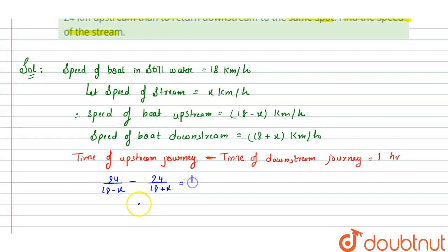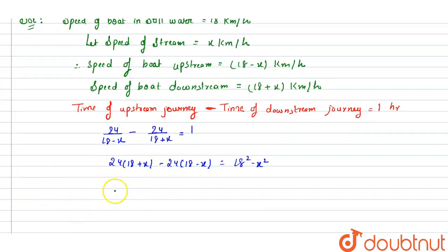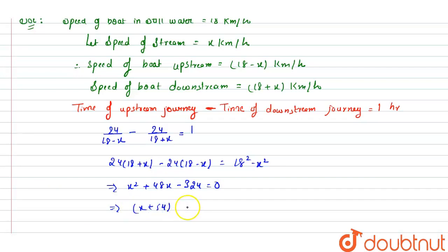Now we have to solve this equation. Taking the LCM, we get 24 into (18 plus x) minus 24 into (18 minus x) equals 18 squared minus x squared. Solving this equation, we get x squared plus 48x minus 324 equals zero. Using the middle term splitting method, we find the factors: (x plus 54) into (x minus 6) equals zero, which implies x equals minus 54 or x equals 6.